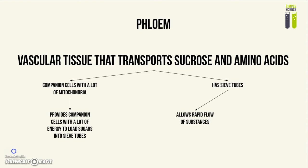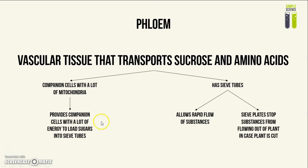It has sieve tubes and this allows the rapid flow of substances, i.e. amino acids and sucrose. Because it has sieve tubes, it will have sieve plates, which will stop substances from flowing out of the plant in case the plant is cut, so that the plant does not lose too much sucrose and amino acids. It provides companion cells with a lot of energy to load sucrose into sieve tubes, and you can infer from this that active transport is being used to load sucrose into the sieve tubes.